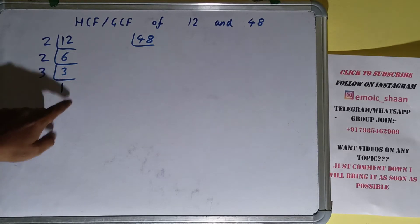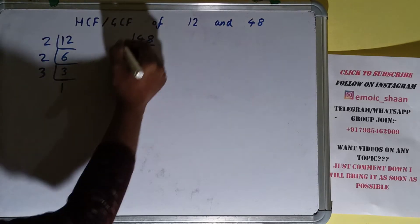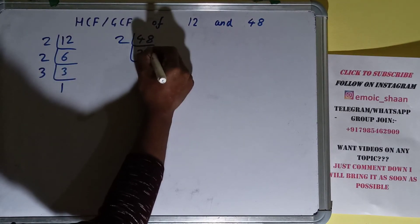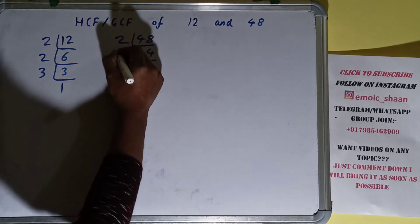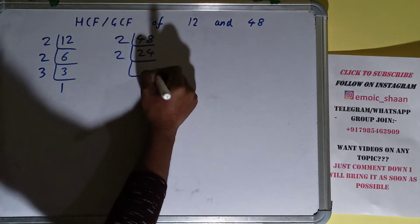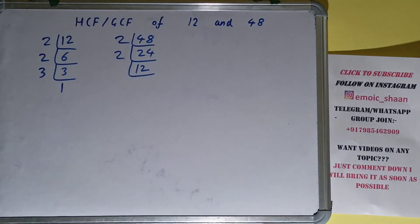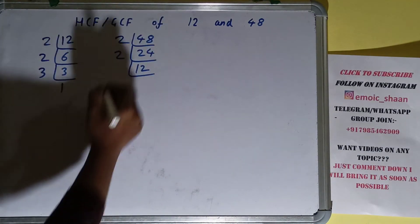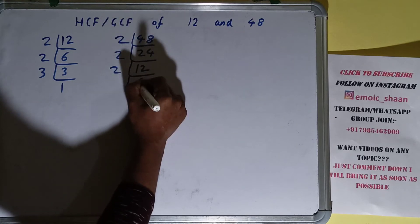Now we need to do the same thing with the number 48. Is the number 48 divisible by 2? Yes, it is divisible and we'll be having 24. Is this number 24 divisible by 2? Yes, it is and we'll be having 12. Is this 12 divisible by 2? Yes, it is and we'll be having 6.